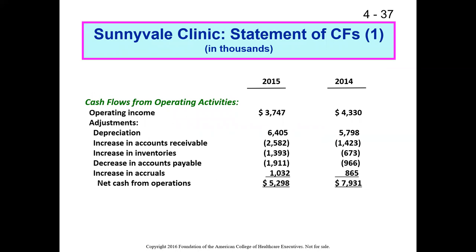The first of the three core sections of the statement of cash flows is cash flows from operating activities. We start with operating income — not quite the end state, but close to it. Operating income is operating revenues minus operating expenses.